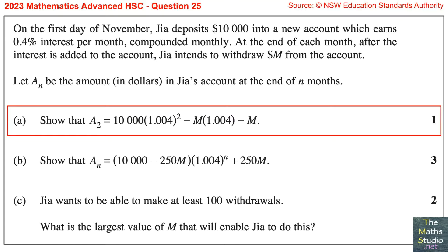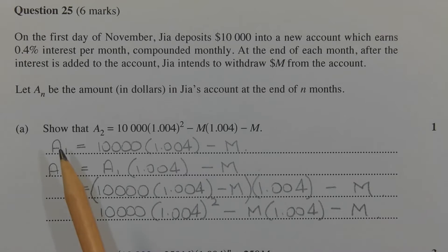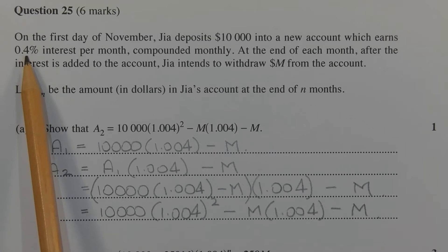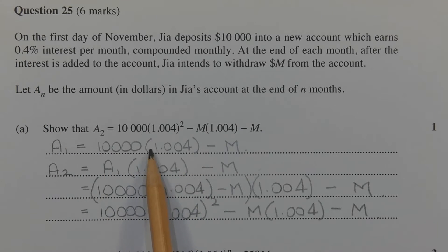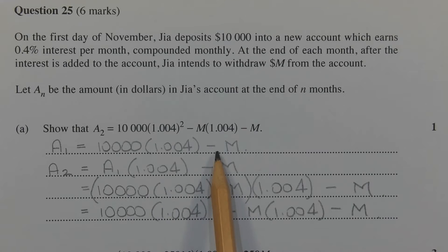Show that A2 equals 10,000 times 1.004 to the power of 2, minus M times 1.004, minus M. Using recurrence relations, let's come up with an expression for A1, which represents the amount in the account at the end of the first month. Starting off with $10,000, increasing that by 0.4% by multiplying by 1.004, and then taking away a withdrawal of M dollars. So A1 is equal to 10,000 times 1.004 minus M.